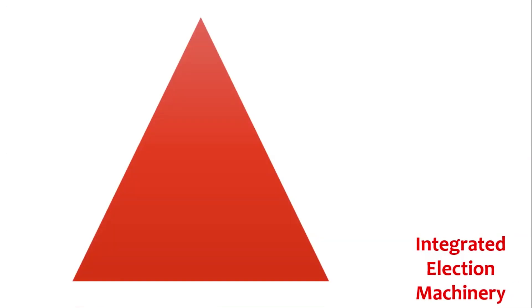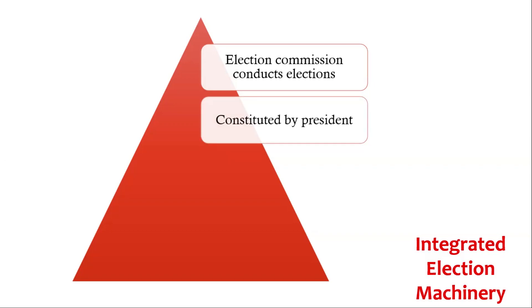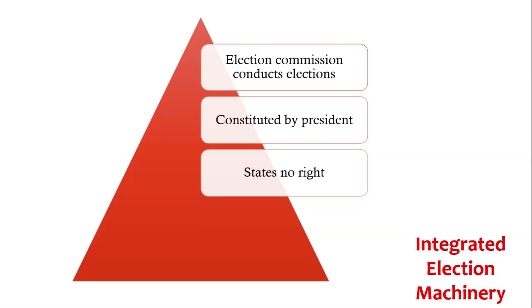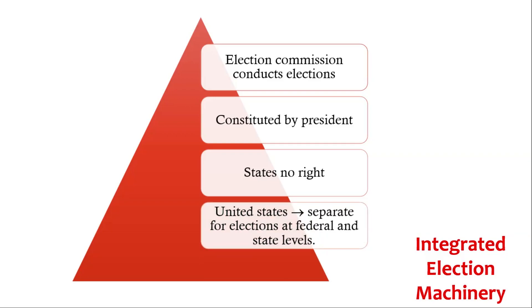Integrated Election Machinery: In India, we follow an Integrated Election Machinery, meaning the Election Commission conducts elections to both the Central and State Legislatures. This Election Commission is constituted by the President and the states have no say in this, nor in the removal of the members of the Election Commission. Whereas in the United States, there are separate machineries for conducting elections at the federal level and the state level.